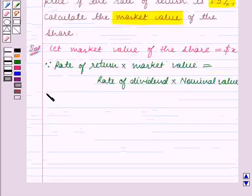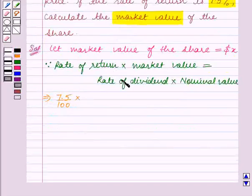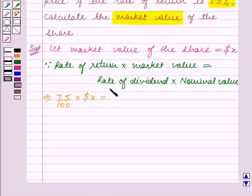So this implies rate of return which is 7.5%, that is 7.5 upon 100, into the market value which we have assumed to be X dollars, is equal to rate of return which is 9 upon 100 into the nominal value which is $100.